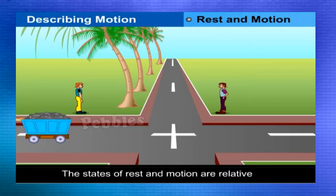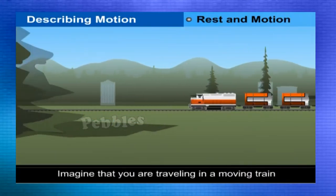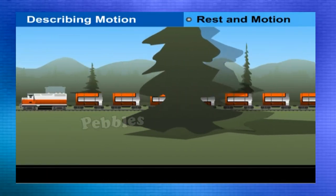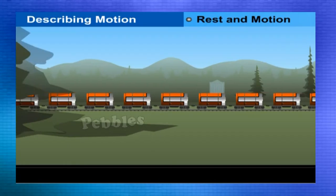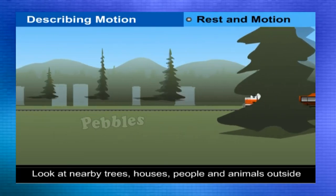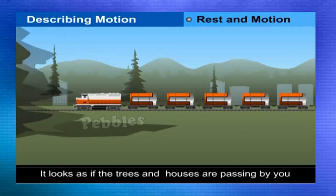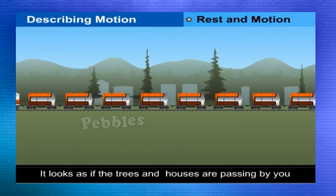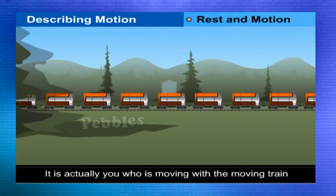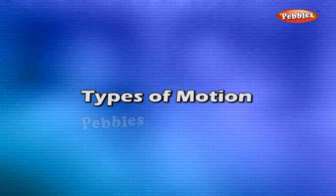The states of rest and motion are relative. Imagine that you are traveling in a moving train. There are many other passengers in your compartment. Is there any change in your position with respect to another passenger sitting by your side even though you are moving with the train? Look at the nearby trees, lampposts, houses, people and animals outside. It looks as if the trees, houses and lampposts are passing by you at a great speed, but houses and trees do not move. It is actually you who is moving with the moving train.